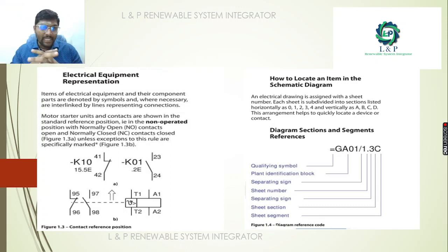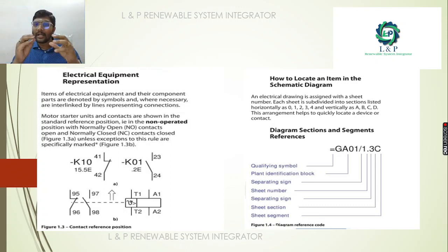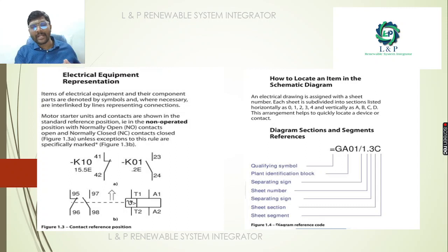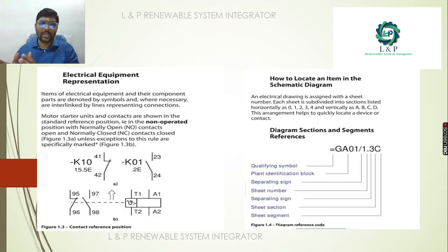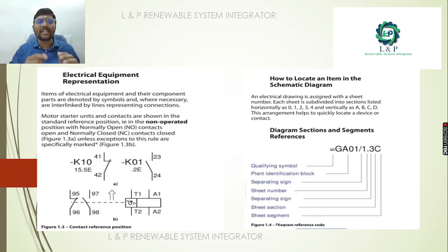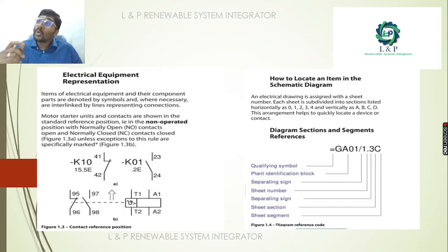Next is the electrical equipment representation. Electrical equipment is mostly represented using contacts — some may be operable, some non-operable. Mostly they will be in NO contact (normally open) and NC contact (normally close), unless there are specific rules, based on which the representation will be provided.